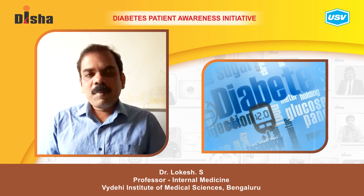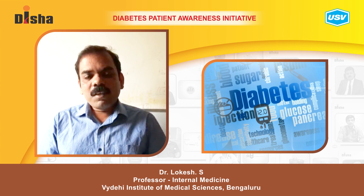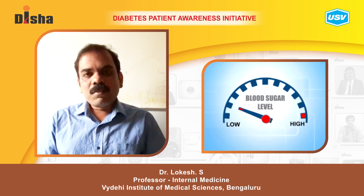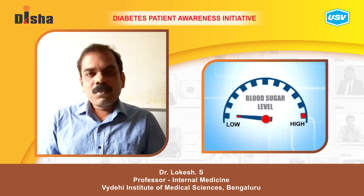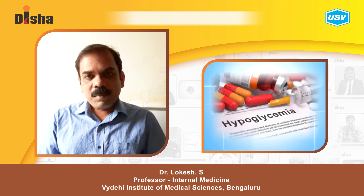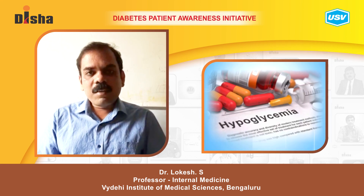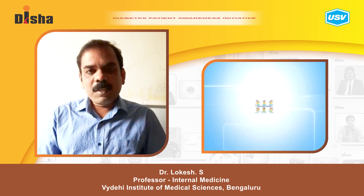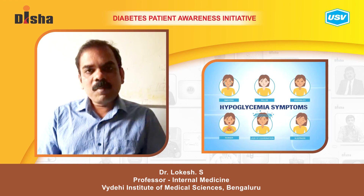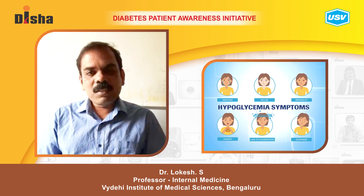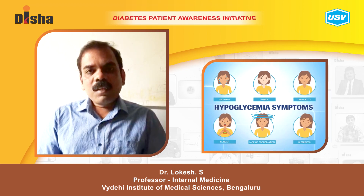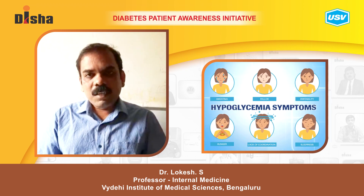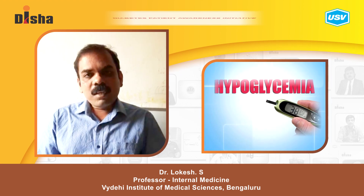Today I'll talk about what first steps we can take if a patient develops a diabetic emergency of low sugars at home. First, it is important to identify when the patient is going into hypoglycemia or insulin shock. Symptoms include palpitations — heart running fast — sweating, irritability, headache, and feeling giddy. You should check the sugars at home with a glucometer.